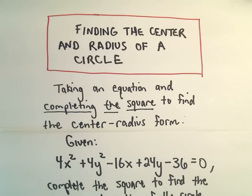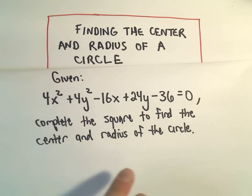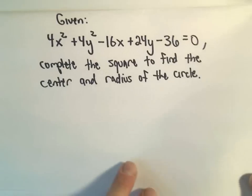Alright, in this video I'm going to do one more example of finding the center and radius of a circle. And again, what we're going to do is we're just going to use completing the square to rewrite our equation and put it in the center radius form.